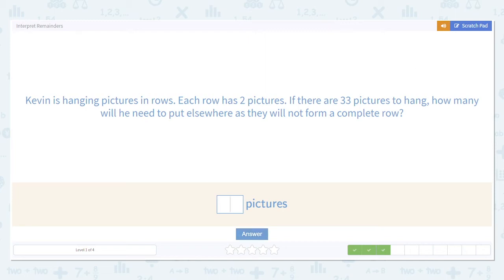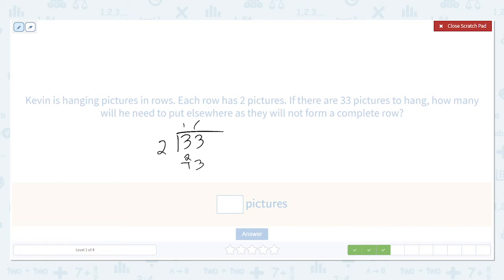Once again, 33 pictures divided by two. Two goes into three once. Subtract, get a one, bring down the three. Two goes into 13 six times. Two times six would be 12, leaving with a remainder of one.